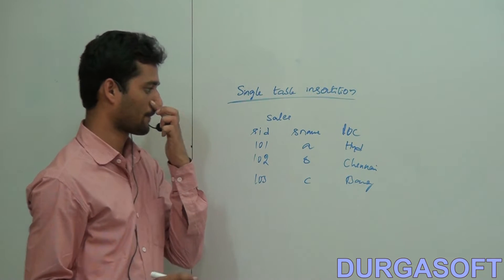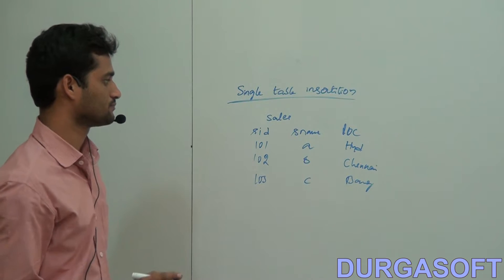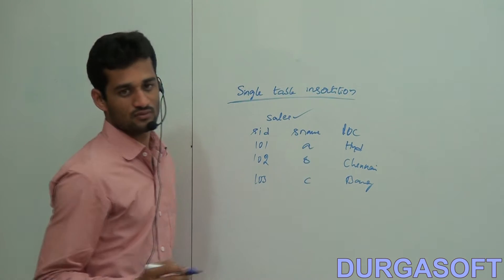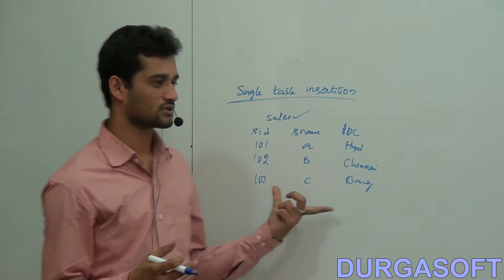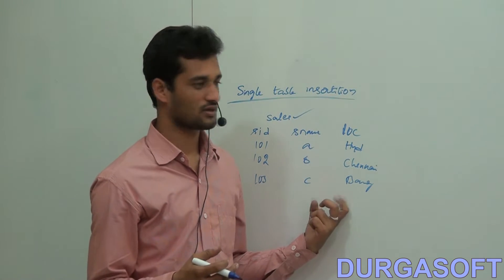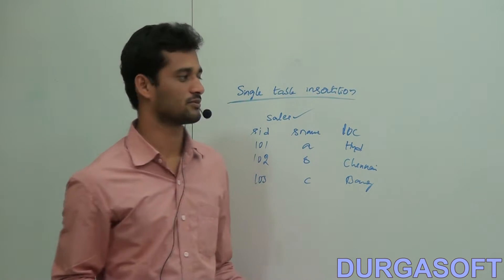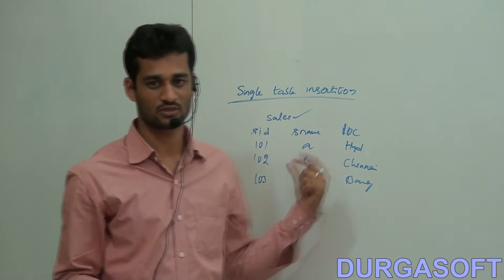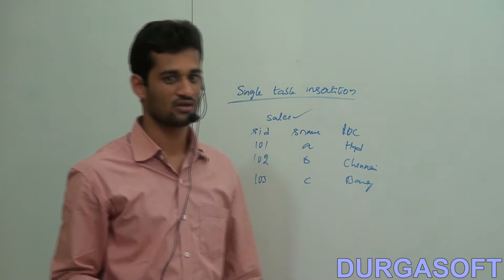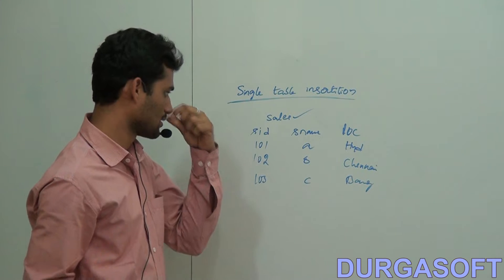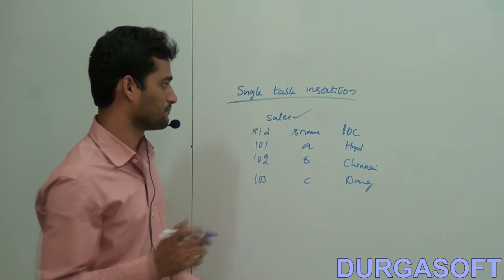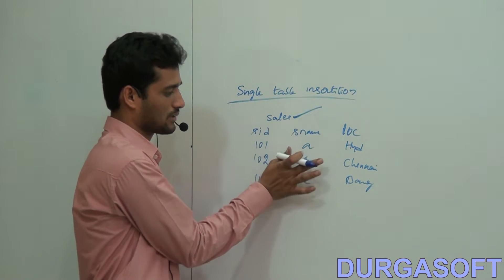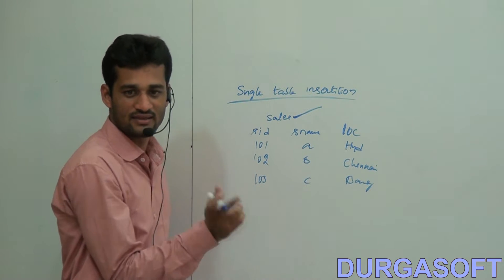Now I want to apply a query on this table and keep whatever output I'm getting into some other table. That is what single table insertion is. Before doing that, you create one table, upload some data, and then create another table.